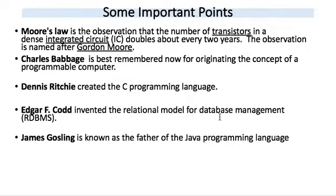Moore's Law is an important observation: the number of transistors in a dense IC doubles every two years. This law is named after Gordon Moore. Charles Babbage is credited with originating the concept of a programmable computer. Dennis Ritchie created the C programming language. Edgar Codd invented the RDBMS relational model for database management.